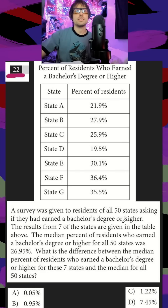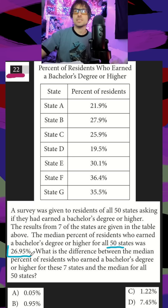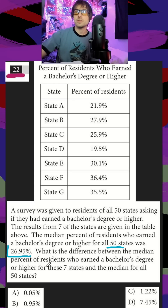A survey was given to residents of all 50 states asking if they had earned a bachelor's degree or higher. The results from seven of the states are given in the table. The median percent of residents who earned a bachelor's degree or higher for all 50 states is given: 26.95. What is the difference between the median percent for the seven states above compared to the median of the total 50 states?